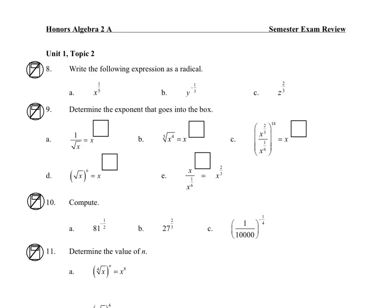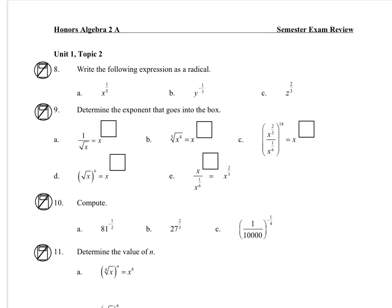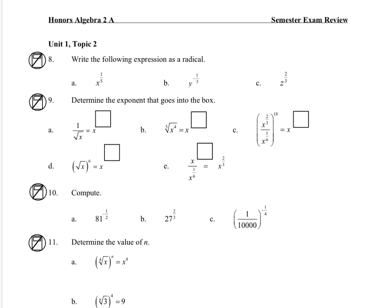For number 8, to write these as a radical, this one's going to be the fifth root of x. Now for b, we have to first change that to 1 over y to the 1/3 to make our exponent positive, so that becomes 1 over the third root of y.